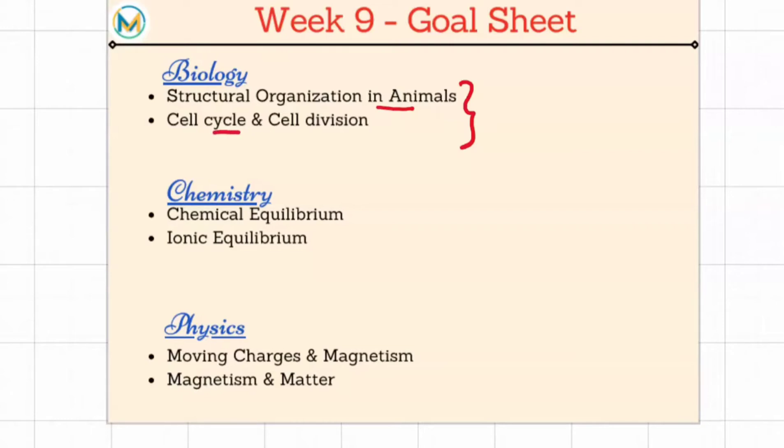And the second chapter is cell cycle and cell division. From both we can expect around two to three MCQs, which will be like eight to twelve marks.